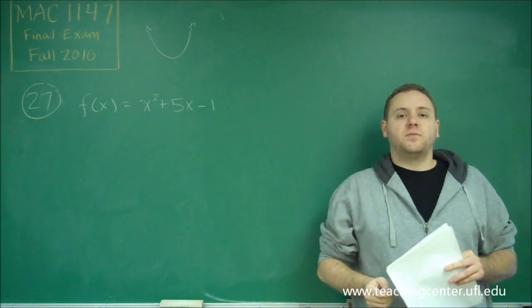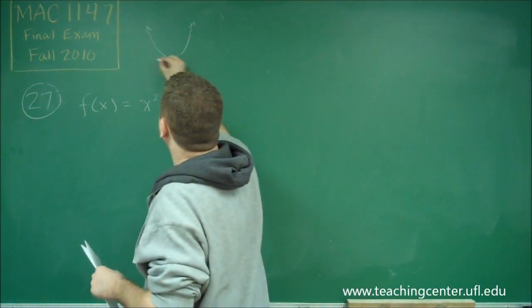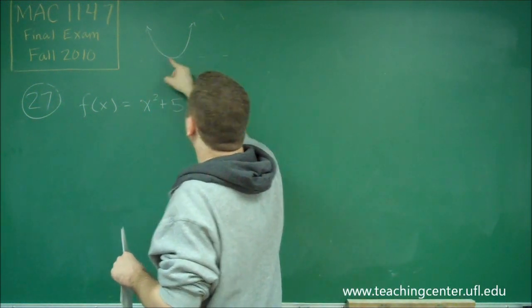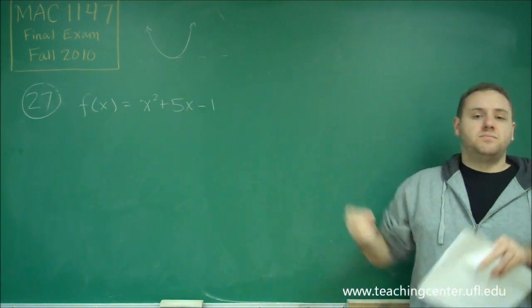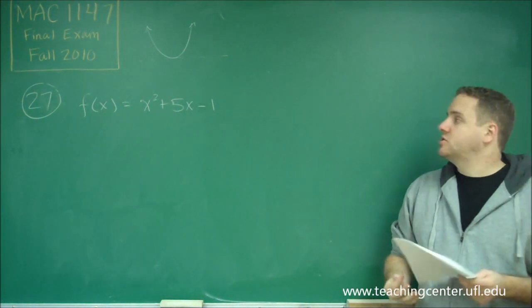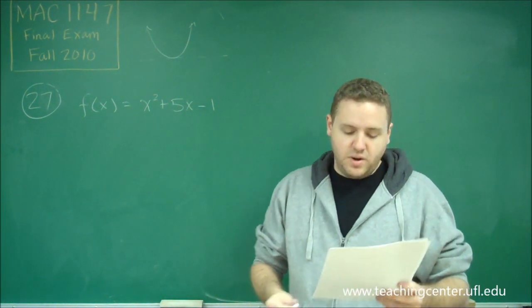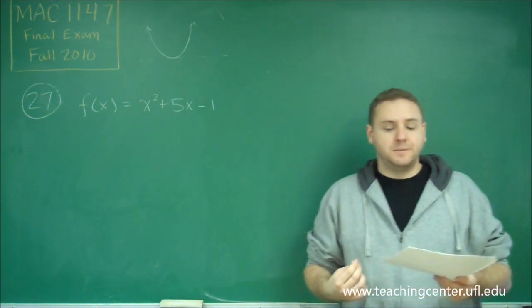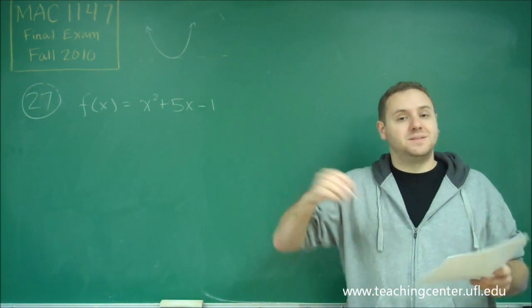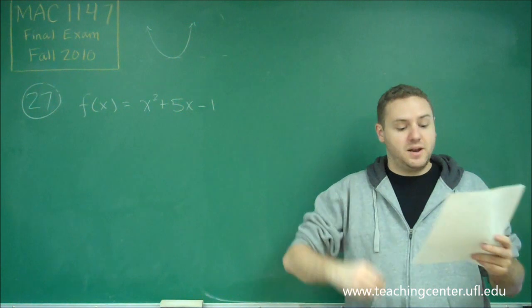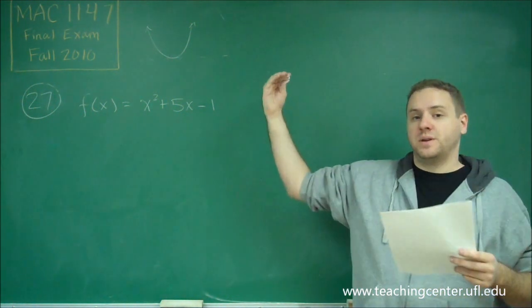That's very helpful for finding the range, because it means our y values go from whatever the y value is at the vertex and everything above that. So what we know already lets us get rid of answer choices D and E, because those would be for a parabola that opens downward — where you go from negative infinity up to some number.